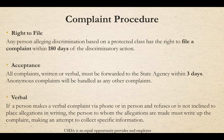USDA has a set procedure for discrimination complaints based on instructions in FNS 113. Sponsors are required to make civil rights complaint information available upon request. When documenting a civil rights complaint, the following information should be included: name, address, and telephone number of the complainant; specific information; location delivering the service; nature of the incident that led the complainant to feel discrimination was a factor; the basis on which the complainant believes that discrimination exists; names, phone numbers, and titles and businesses or personal addresses of persons who may have knowledge of the discriminatory action; and the date or dates the action occurred.